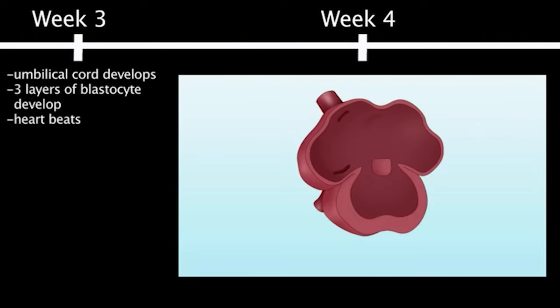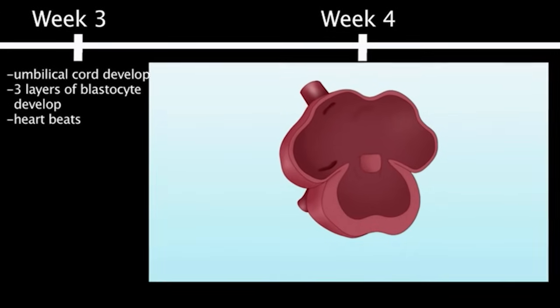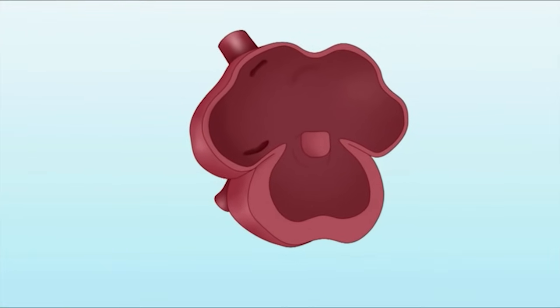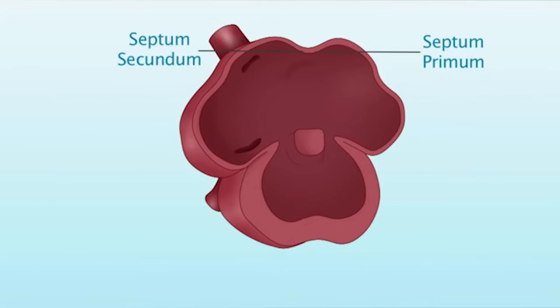Entering into the fourth week of fetal life, the atrial septum and ventricular septum begins to form. The atrial septum grows in layers and includes the tissues of septum primum, septum secundum, and endocardial cushion tissue.